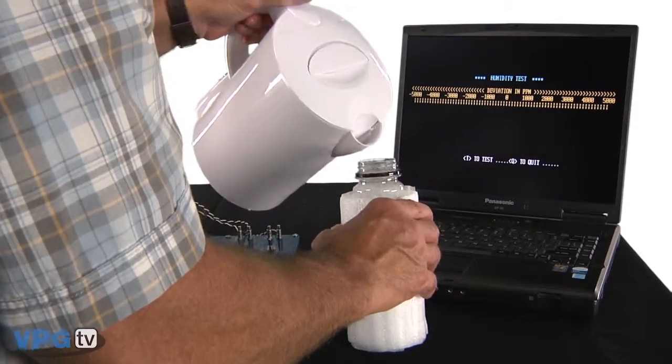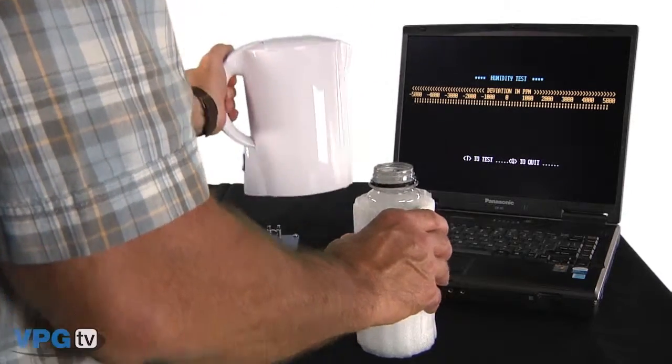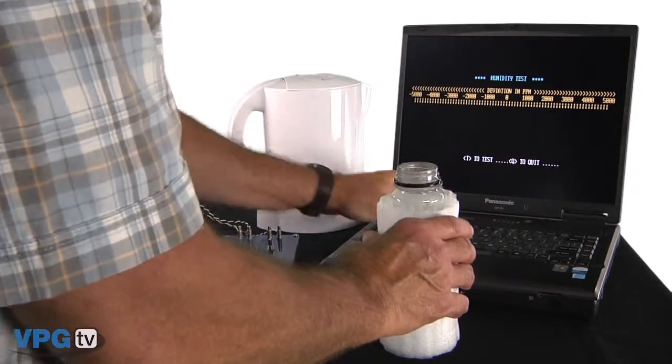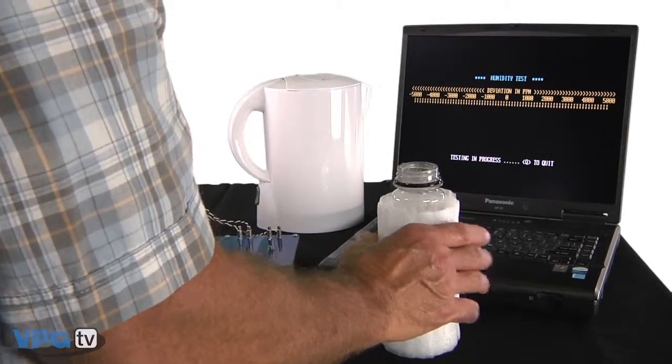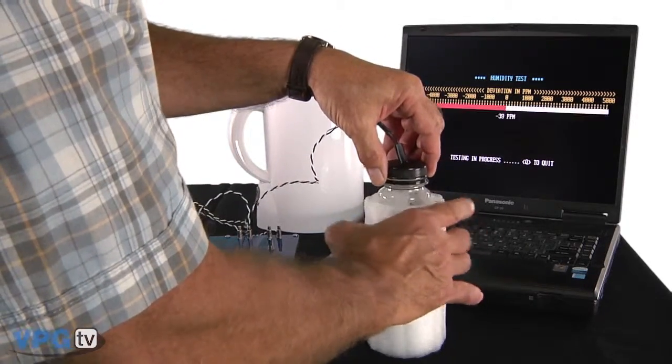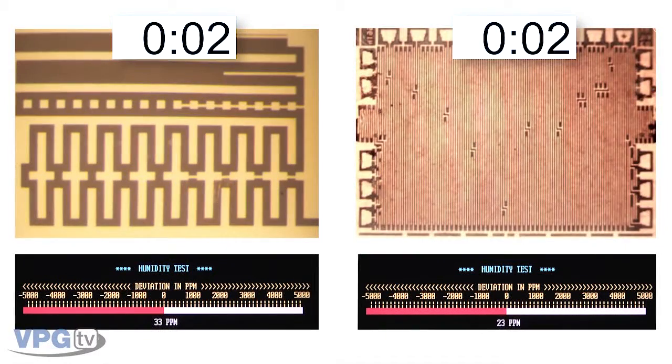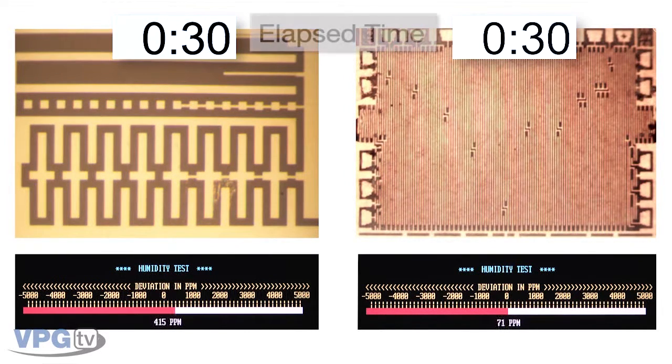The test involves pouring a few ounces of hot water into this insulated bottle, powering up the test unit, and suspending it in the bottle. Now let's test both an uncoated thin film and an uncoated foil resistor and see what happens.